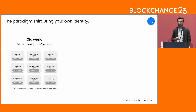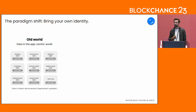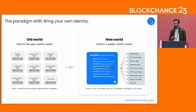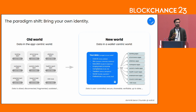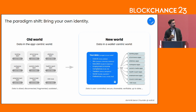What that means is that we're moving from this world today — the old world — where people providing applications basically have to take care of identity themselves, which results in the fact that the average person has more than a hundred different accounts across hundreds of different applications where data is siloed, disconnected, fragmented — to a world where everybody can control their identity information from identity wallets to very easily share that information with whatever application they want to use. We're moving from siloed and disconnected data to data that is user-controlled, secure, easy to share, and verifiable.